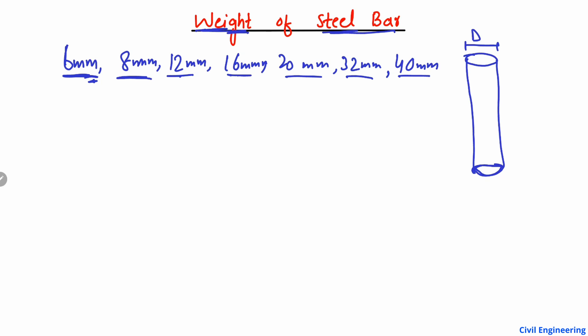Now, how to find out the weight of steel bar per meter in kg. I'm going to find out one example and then the rest is very easy to follow. The formula used to find out the weight of the steel bar in kg per meter is D squared divided by 162, where D is the diameter of the steel bar.